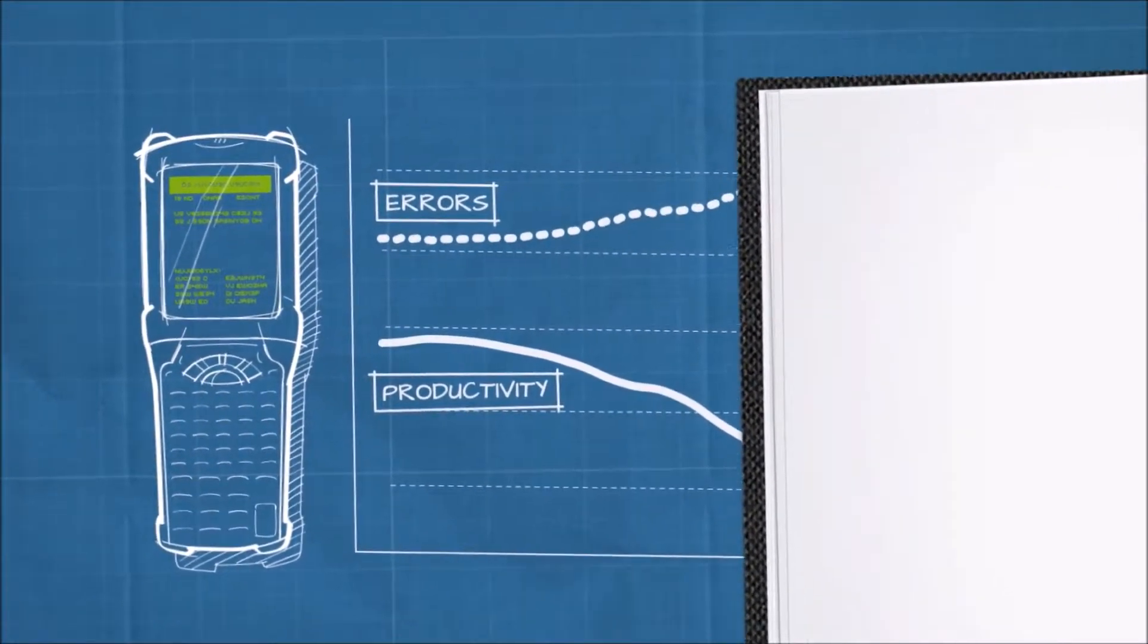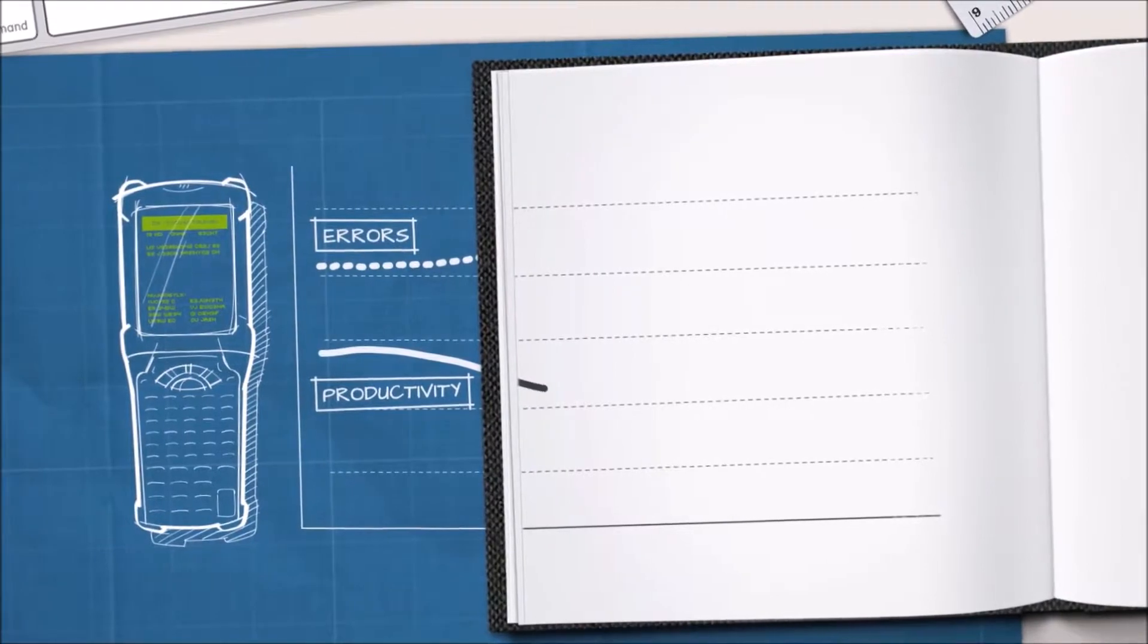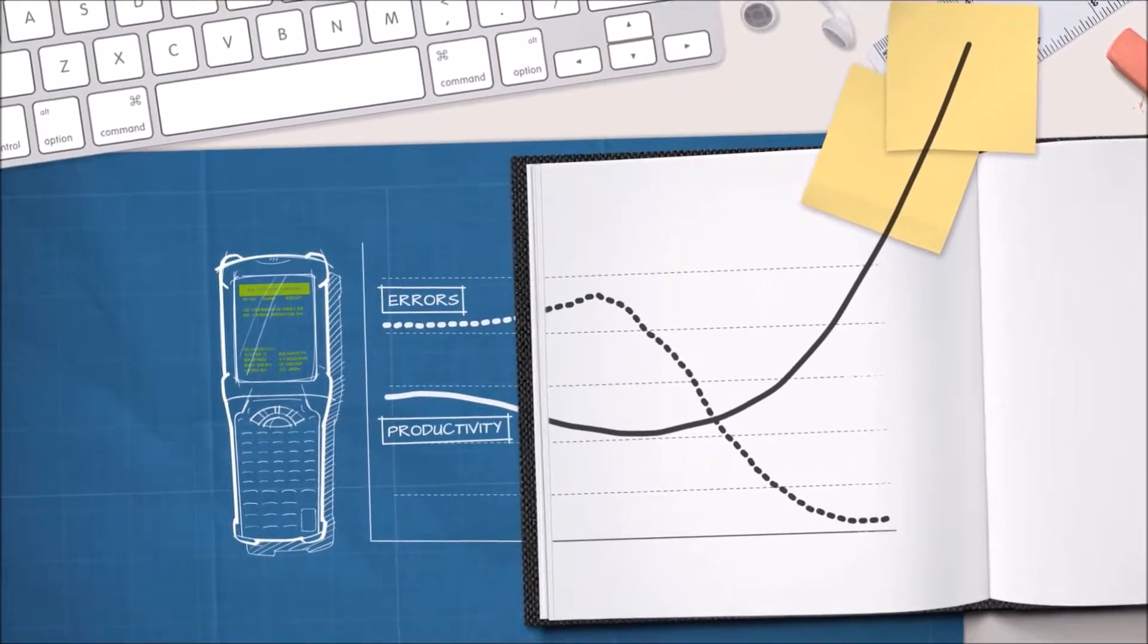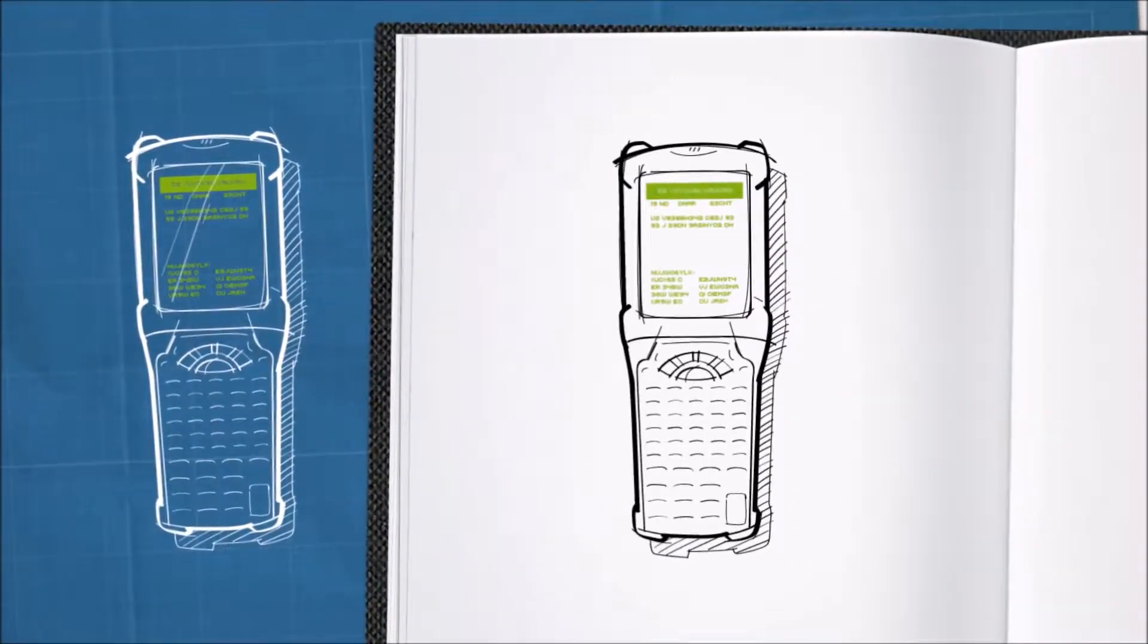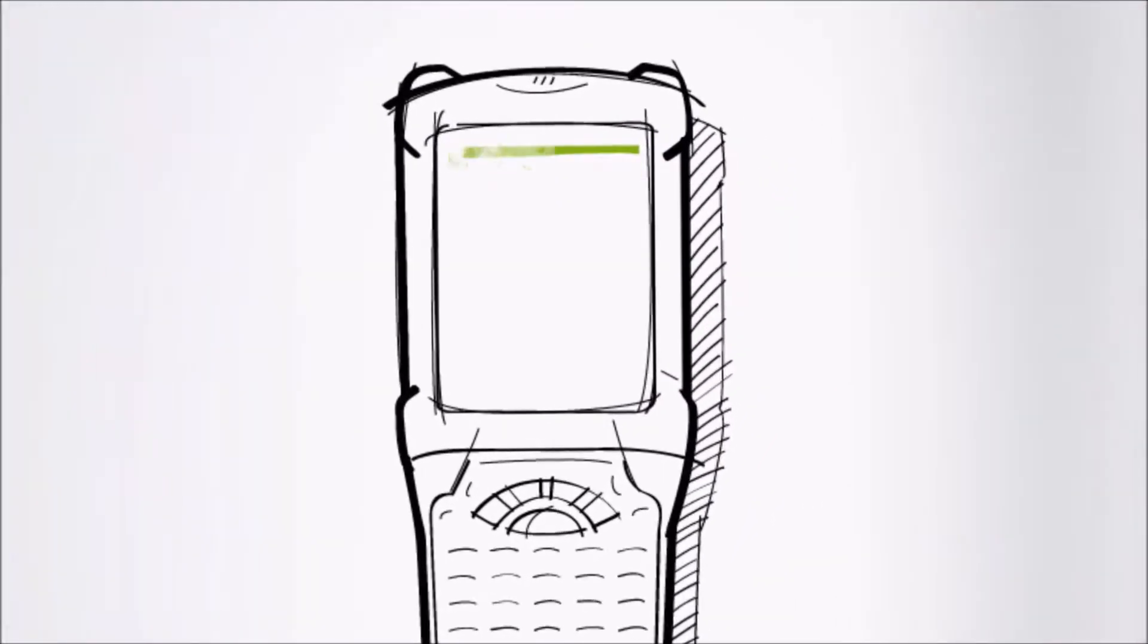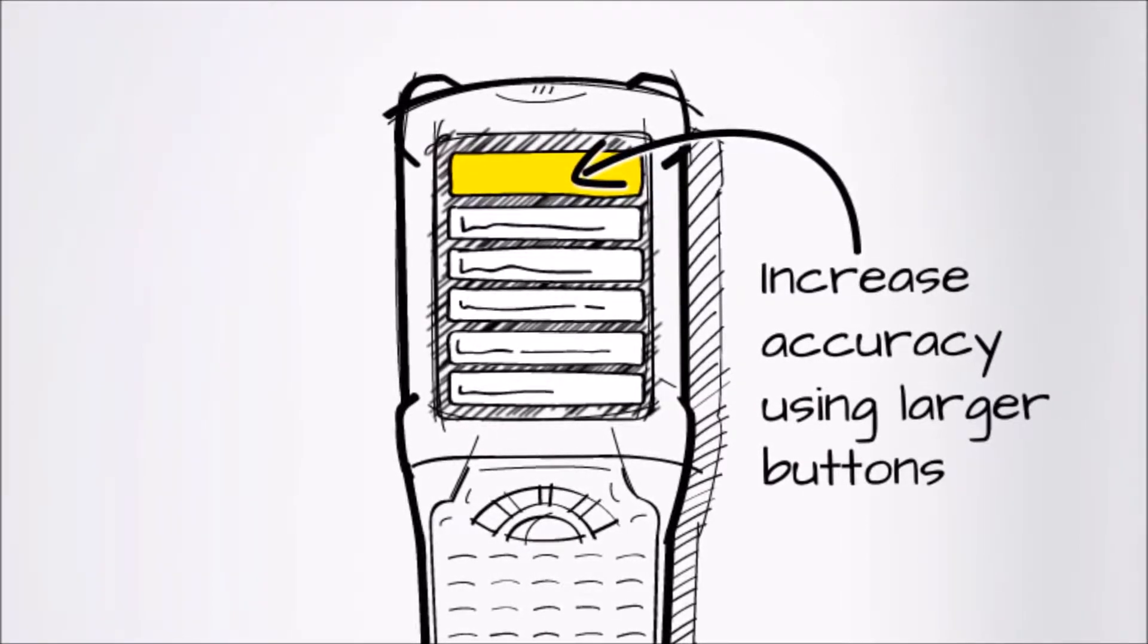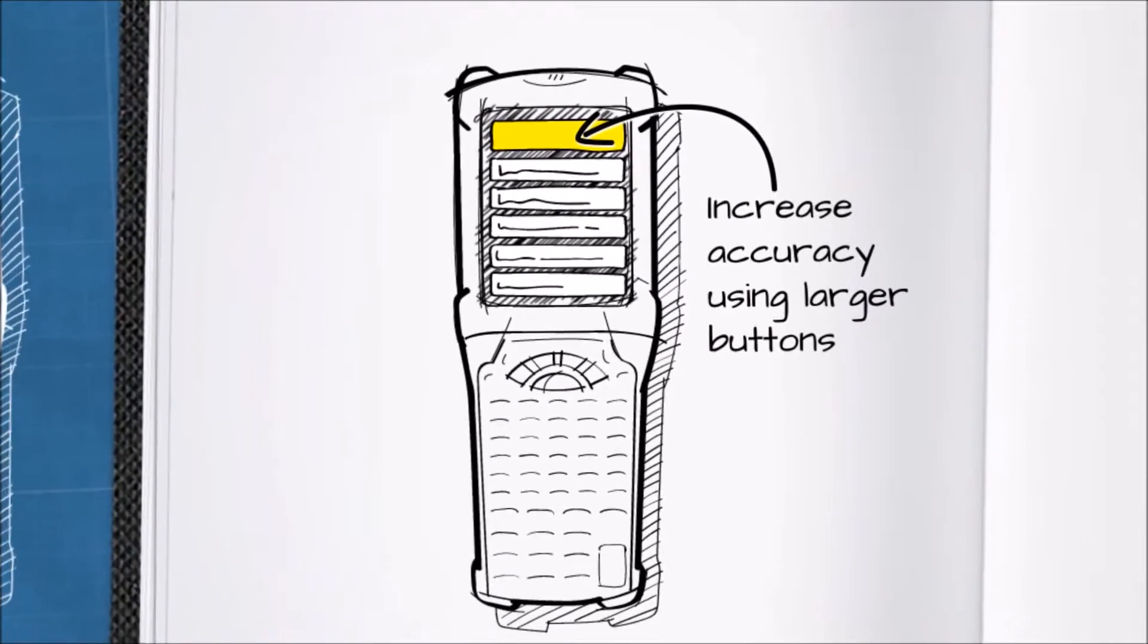Well then, what can we do about this? We need to increase productivity and decrease errors. Here's a thought. I'll modernize that green screen for starters, and put in big buttons that you see on most modern user interfaces. That should reduce errors and help with the productivity.